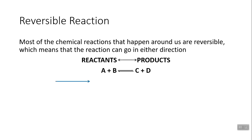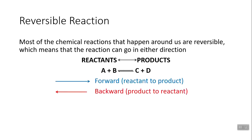If the arrow is pointing to the right, this is your typical normal forward reaction — reactants forming products. When the arrow is pointing backwards, we're talking about a backward reaction where product goes back to reactant. A reversible reaction means it can go in either direction, though not all chemical reactions are reversible — but most of them are.